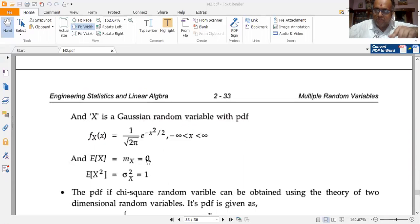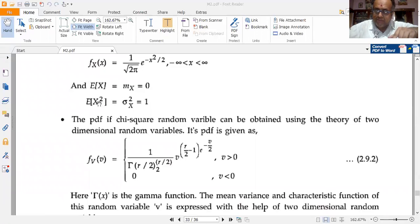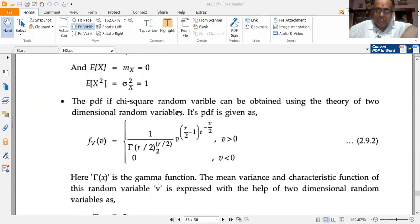Where mean mu_x equals m_x equals 0 and variance sigma_x squared equals 1. Variance, strictly speaking, equals E[x²] minus mean squared. So here E[x²] minus 0 squared gives me 1 minus 0 equals 1.